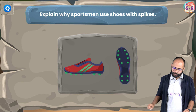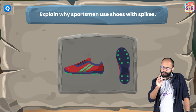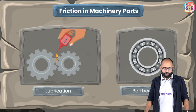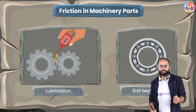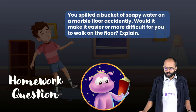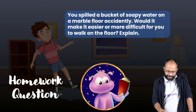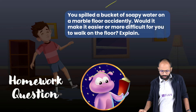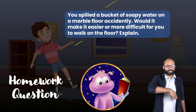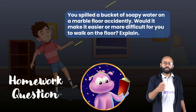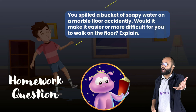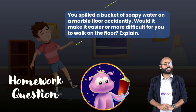A homework question: explain why sportsmen use shoes with spikes. Write your answer in the comment section as if you were writing an exam answer. Another homework question: you spilled a bucket of soapy water on a marble floor accidentally — would it make it easier or more difficult for you to walk on the floor? Explain. Be creative and write as if answering an exam question.